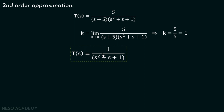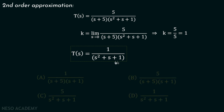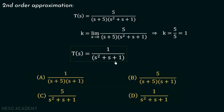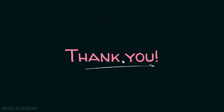After approximation, we get T(s) = 1 / (s² + s + 1). The DC gain of this transfer function is also equal to 1, which is why the numerator is changed to 1. It is very important to maintain the DC gain when doing the approximation. Therefore, T(s) = 1 / (s² + s + 1) is the answer, which is option C, and we are done with this lecture.